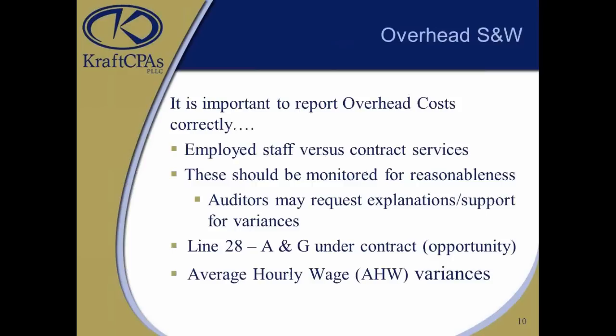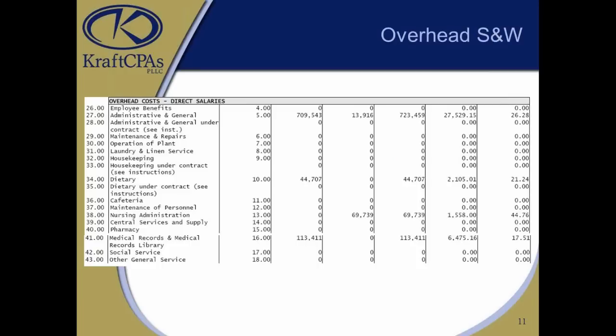Slides 10 and 11 look at overhead costs reported — administrative and general costs such as business office, accounting, collections, and registration, as well as other overhead areas: Laundry, Linen, Housekeeping, Plant Operations, Dietary, Nursing Administration. These are reported on lines 26 through 43. These are the salaries from Worksheet A input by department. You're entering hours associated with those salaries, and make sure any accruals are considered so your hours are apples-to-apples with the salaries.